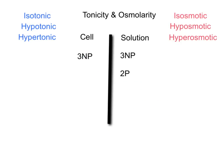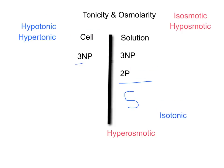In the final example, adding up all particles, there are five in the solution and only three in the cell, making the solution hyperosmotic. Looking at the movement of water, there are three non-penetrating particles on both sides, so there will be no movement of water. The cell will neither shrink nor swell, making the solution isotonic.